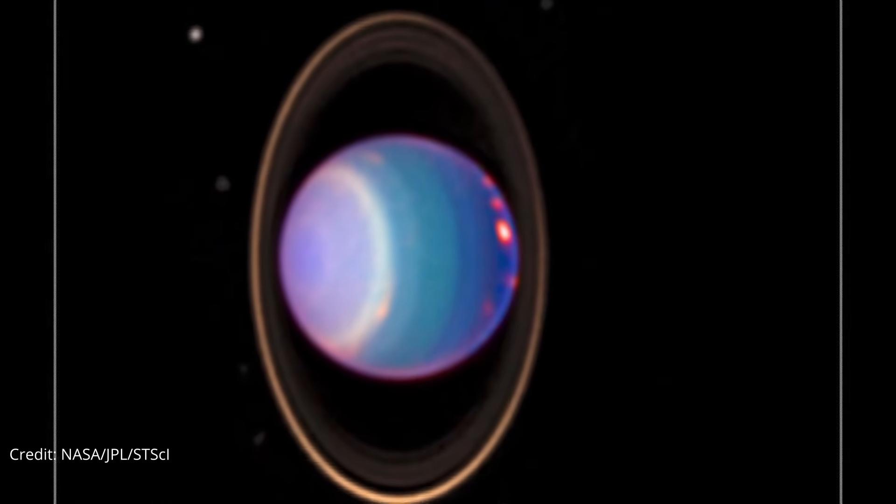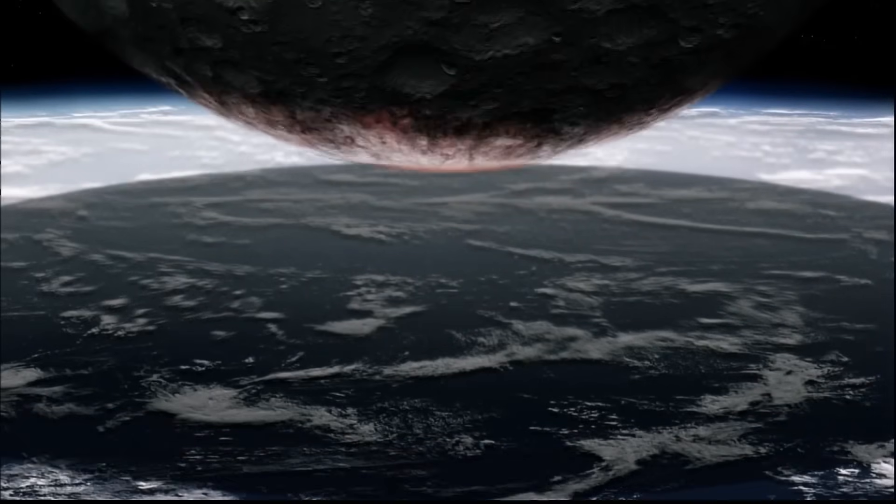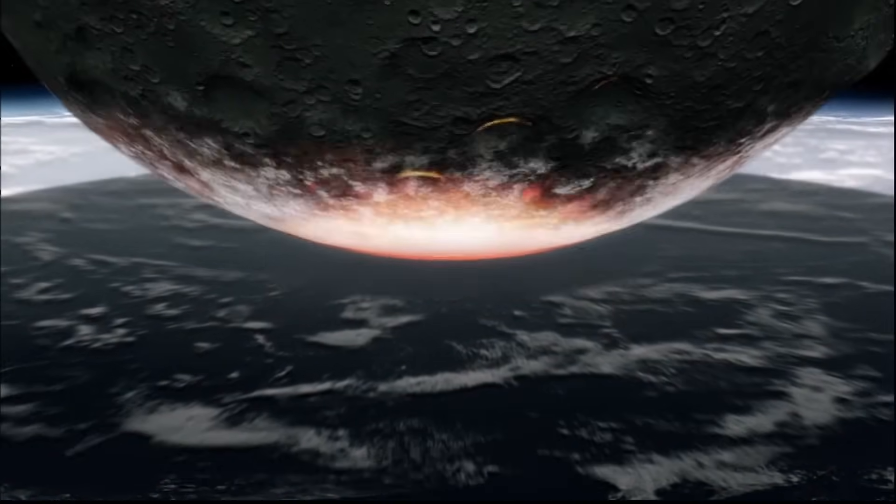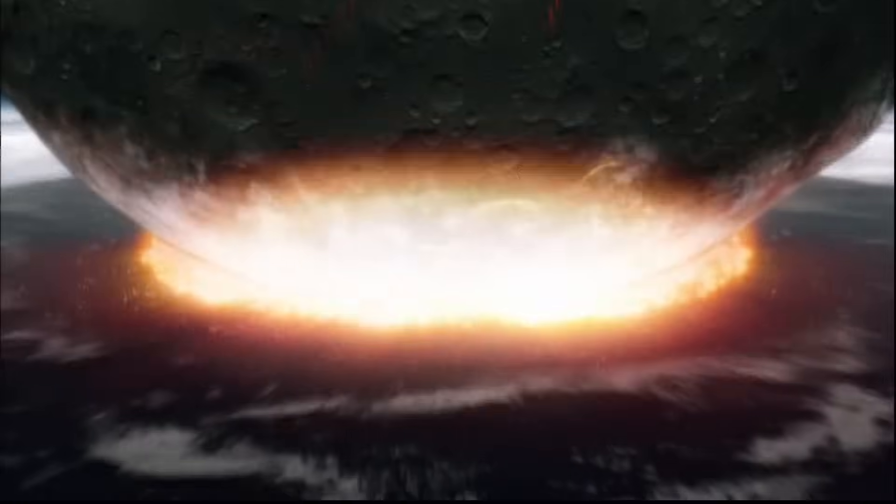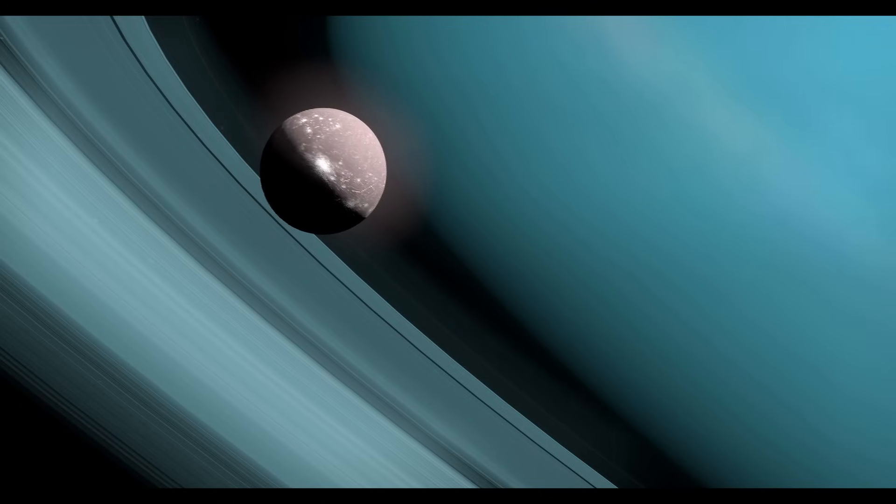It's essentially rolling around the sun on its side. This bizarre orientation is thought to be the scar from a cataclysmic collision with an Earth-sized proto-planet billions of years ago. This ancient catastrophe dictates its entire climate today.